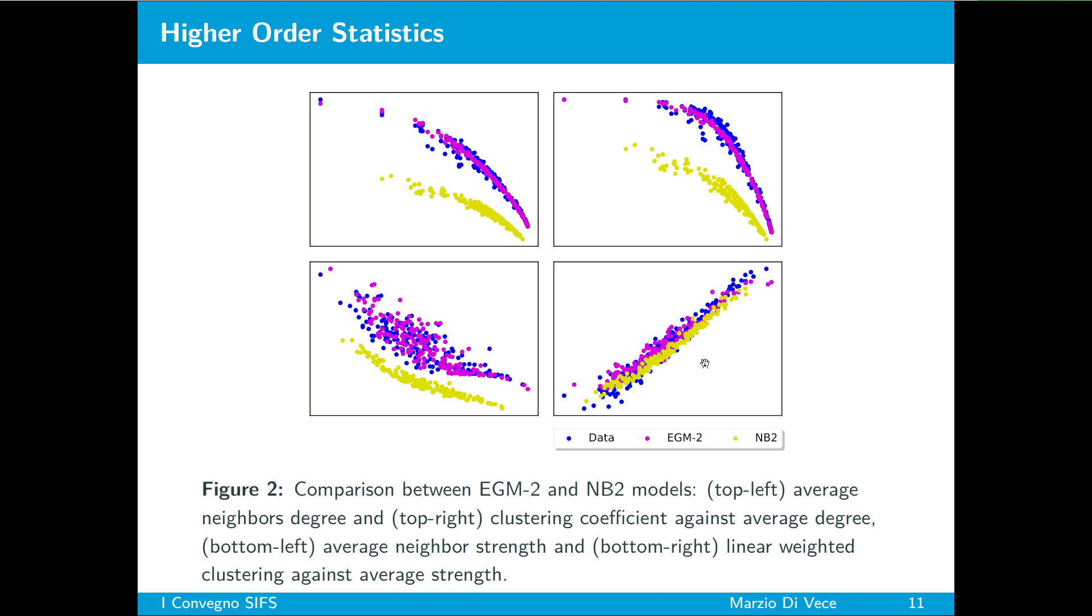The models which constrain the degree sequence are the best performing both for the basket of maximum entropy models and econometric models. So we could think that the degree information increase the prediction of the network structure but also overfitted data because we increase by n minus one the number of parameters. That is not true as pointed out by selection criteria such as AIC. We see the EGM-2, EGMTS which are the models that constrain the degree sequence systematically reduce their selection criteria.